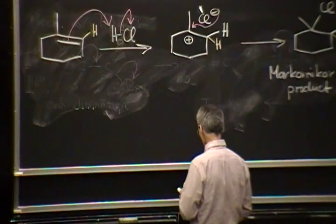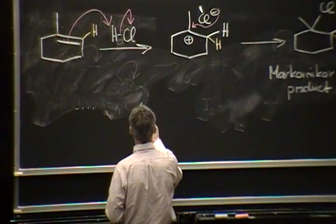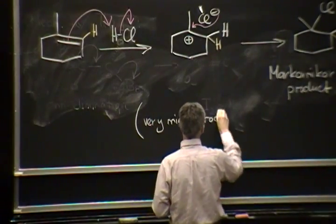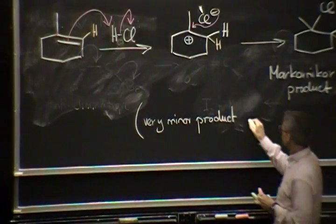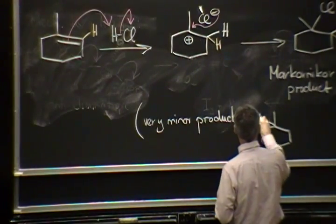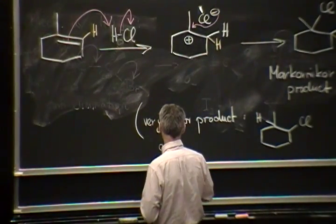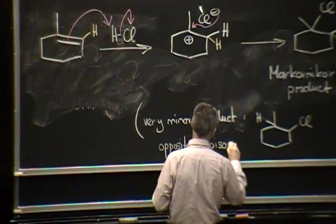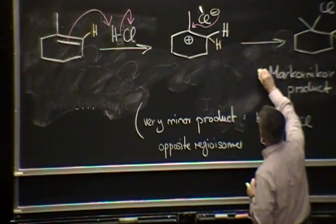The opposite product is not formed, or in very small amounts. So, I'm calling this now a very minor product. It's always a little bit because the possibilities are not infinitely different. But it's a very minor product, is the opposite regioisomer. This is the opposite regioisomer.